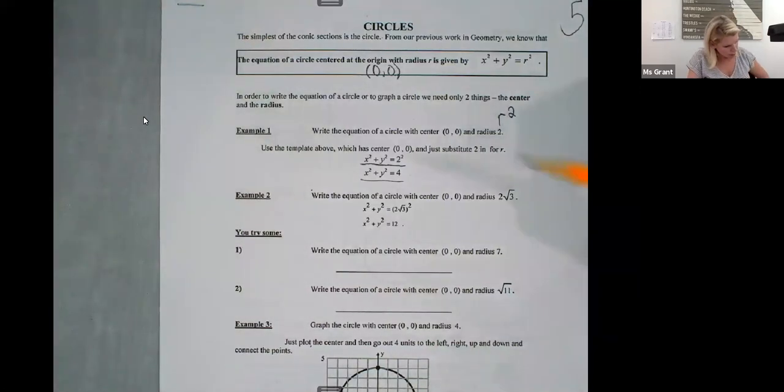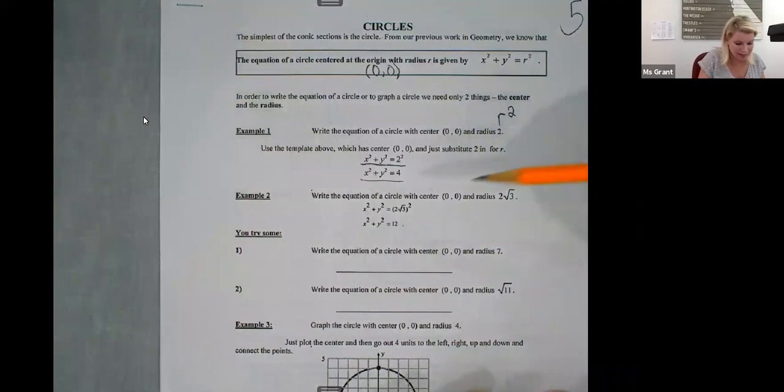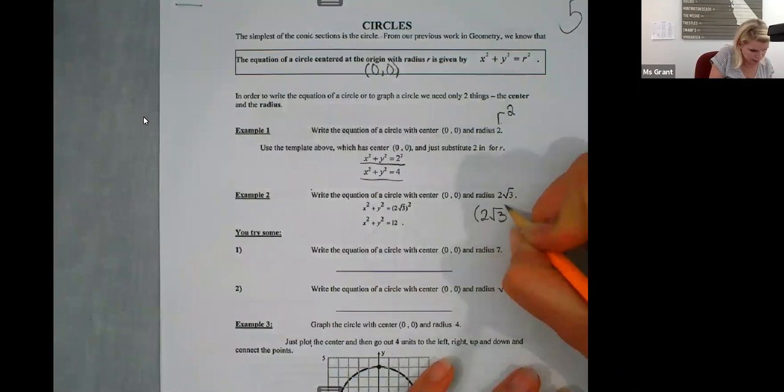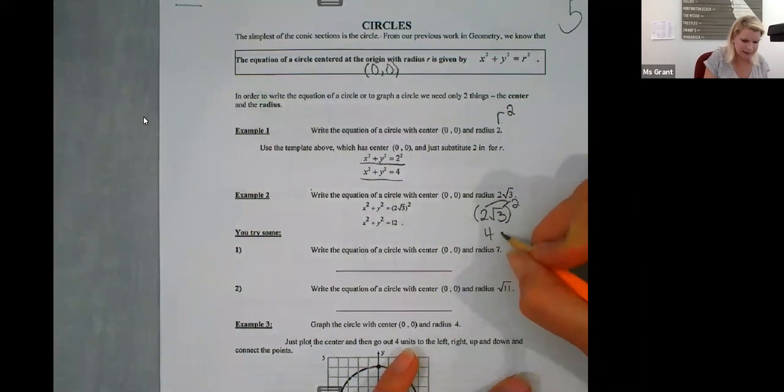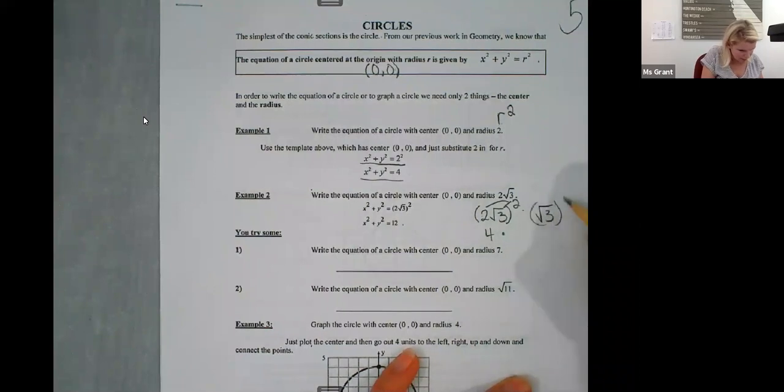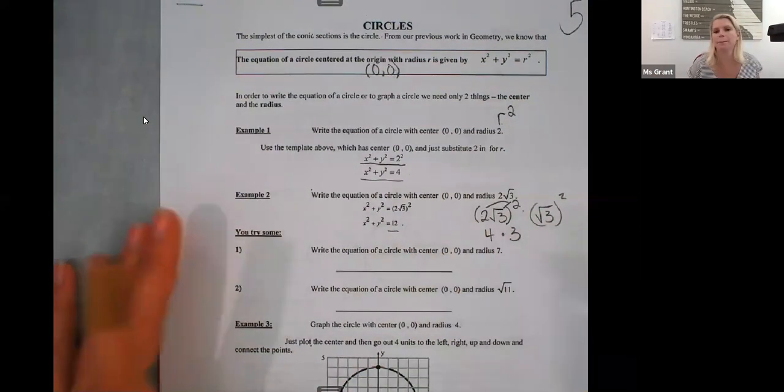On example two, write the equation of a circle with zero, zero at my center and a radius of two rad three. Well, two radical three squared means that the two gets squared and the rad three gets squared. So it's four times, you know, two squared is four. Rad three squared is just three. So that's going to be 12. And that's where the 12 came from.